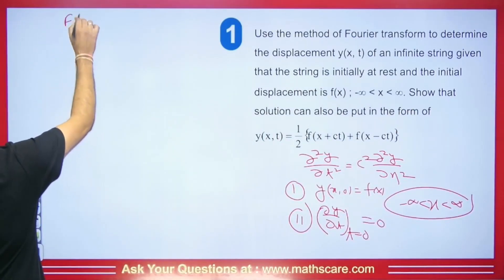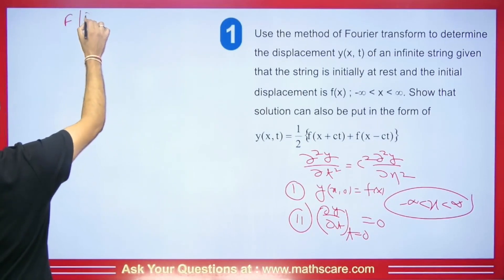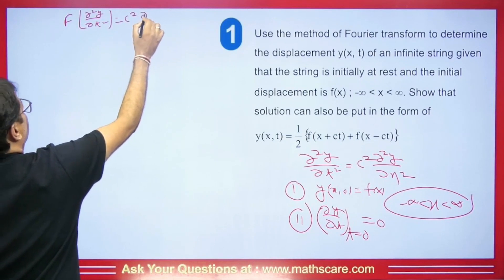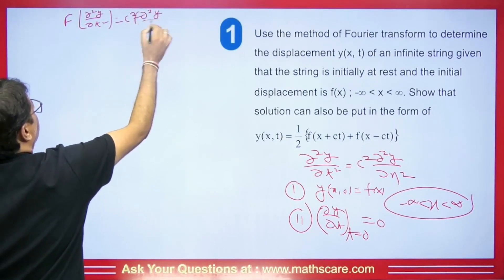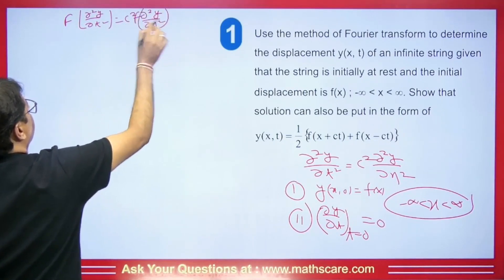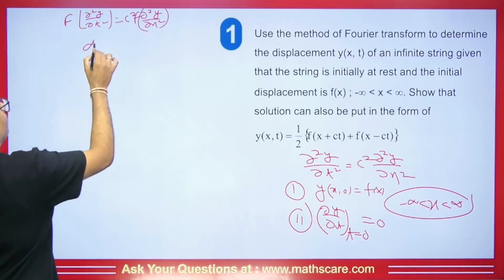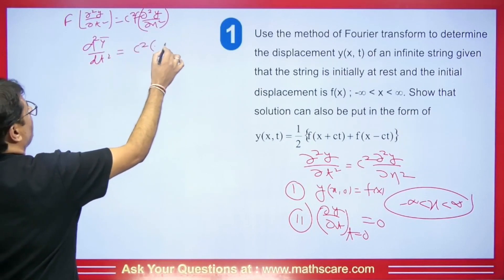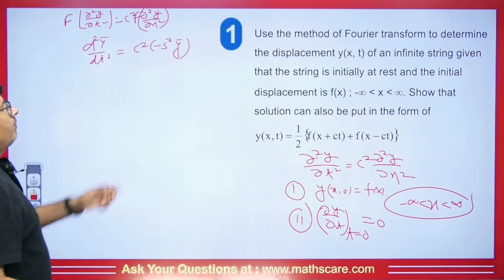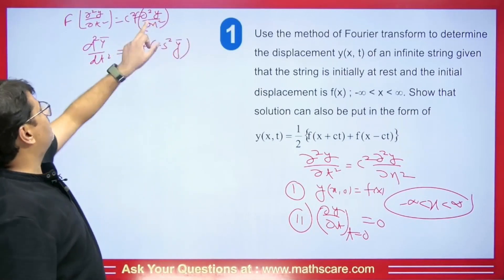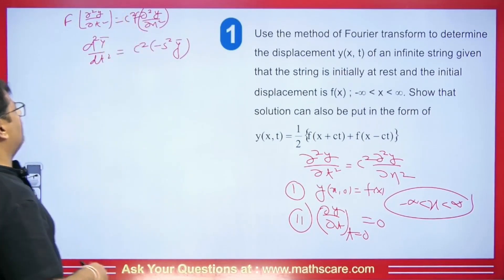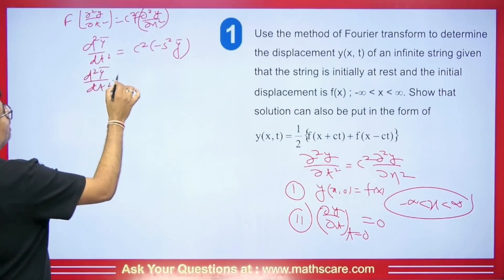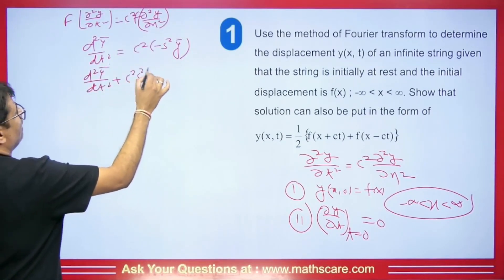Taking the Fourier transform of ∂²y/∂t² = c² ∂²y/∂x², the left side becomes d²ȳ/dt² and the right side gives c² × (−s²ȳ), since the Fourier transform applies to x. This gives: d²ȳ/dt² + c²s²ȳ = 0.